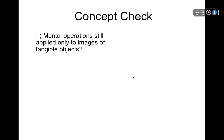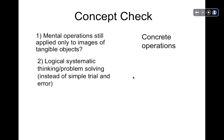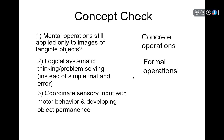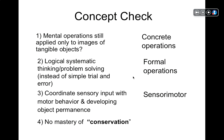Concept check for Piaget's stages: Mental operations applied only to images of tangible objects — that's the concrete operational stage. Logical, systematic thinking and problem-solving instead of simple trial and error — that's formal operations. Coordinating sensory input with motor behavior and developing object permanence — that's the sensorimotor stage. No mastery of conservation — that's the pre-operational stage.